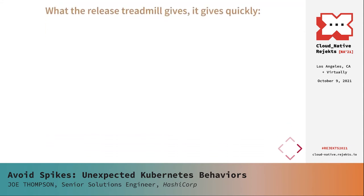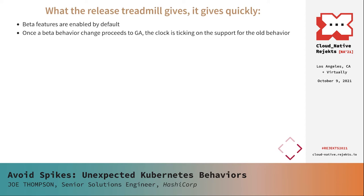Another thing about that release treadmill that can throw you is the behavior of beta features. Beta feature gates are enabled by default. If you notice an alpha feature that's going to affect you operationally, you don't have as long as you might think before that effect lands in a new release and you have to adapt to it or disable it. And released versions fall out of full upstream support after just a year, so staying on a version that behaves the way you need isn't a realistic long-term strategy if that new behavior proceeds from beta to GA.